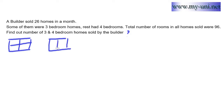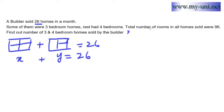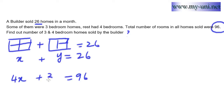We know that the sum of three-bedroom and four-bedroom homes is 26. If we represent four-bedroom homes by x and three-bedroom homes by y, then x plus y is equal to 26. We also know the total number of rooms in all homes sold was 96. The number of rooms in four-bedroom homes is 4x, and for three-bedroom homes it's 3y, so 4x plus 3y equals 96.